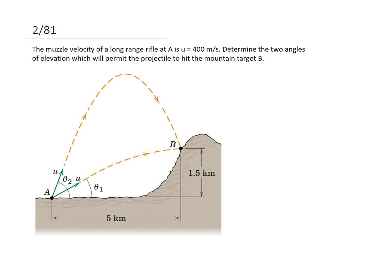This question is looking at projectile motion. The muzzle velocity of a long-range rifle at A is 400 meters per second. Determine the two angles of elevation which will permit the projectile to hit the mountain target B.